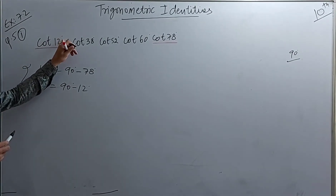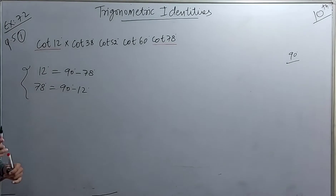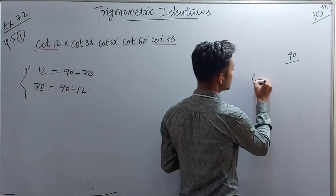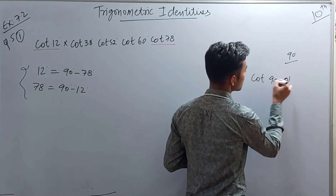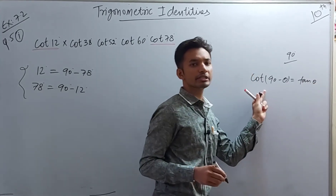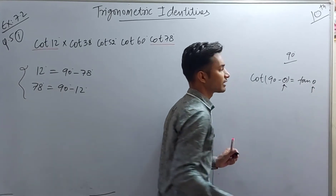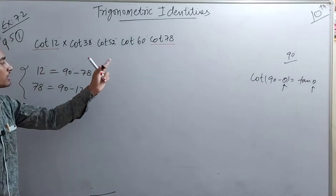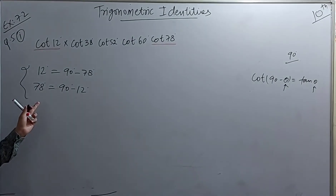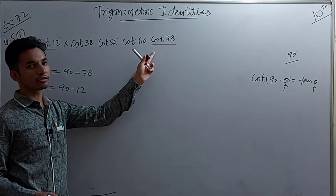Because we have 12° here and 78° there, we need to make both theta values similar. We do this so we can easily use the identity: cot(90° - θ) = tan θ. For this identity, both theta values must be the same. That is why we expand 12° or 78° using the complementary angle.